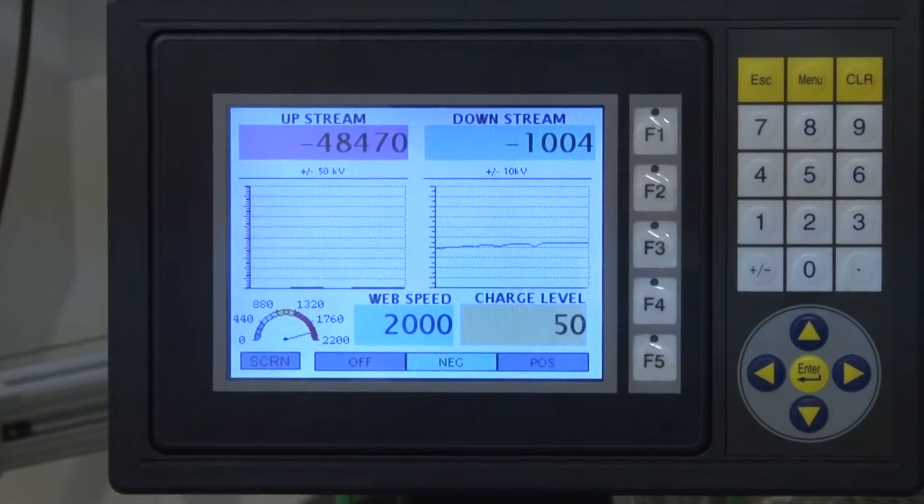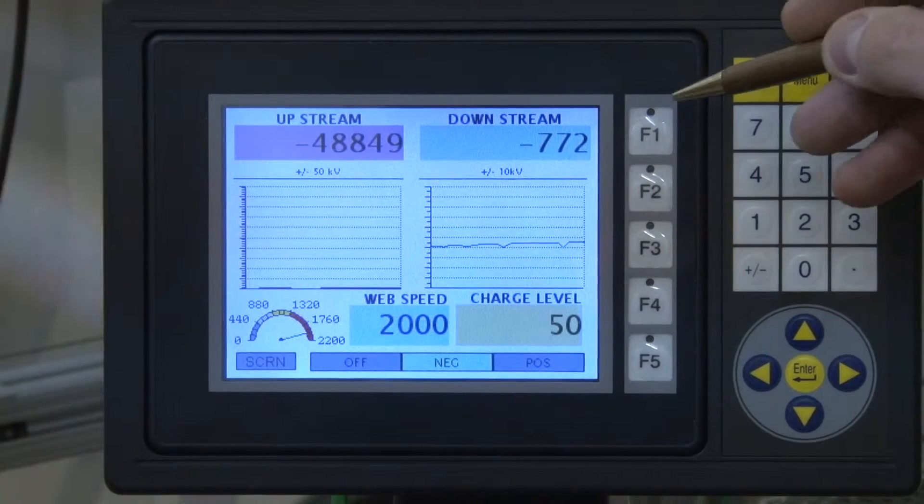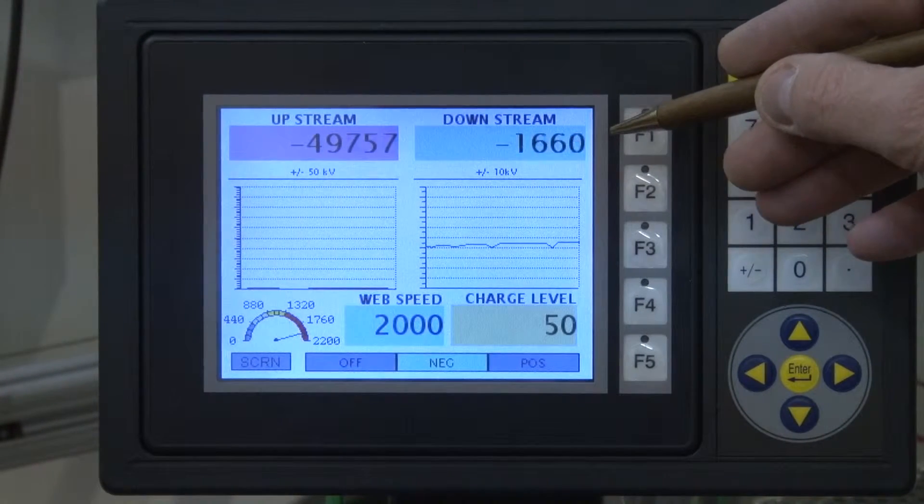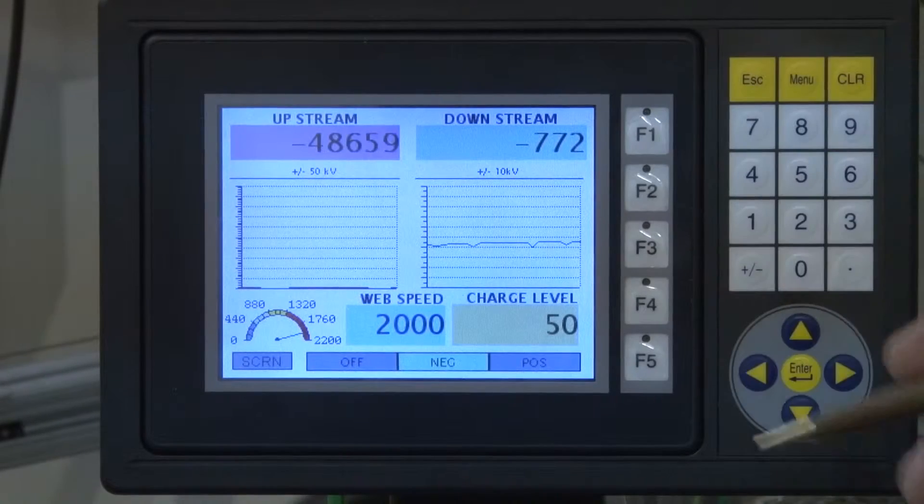As this runs, that number will actually continue to reduce. So now you can see that we're down under 1,000 volts. So this is really excellent performance with the auto-tune mode.